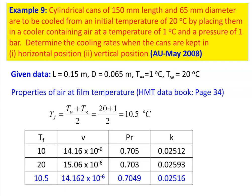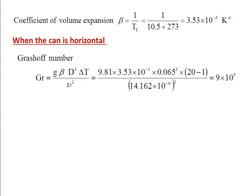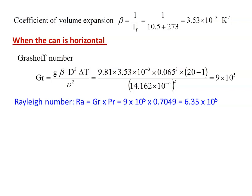Properties of air at film temperature (20+1)/2 = 10.5°C from page 34: kinematic viscosity = 14.16×10⁻⁶, Prandtl number = 0.7049, thermal conductivity = 0.02516, and β = 1/Tf = 3.53×10⁻³. For the horizontal cylinder, Grashoff number = G·β·d³·ΔT/ν² = 9.8×3.53×10⁻³×0.065³×19 / (14.16×10⁻⁶)² = 9×10⁵. Rayleigh number = Gr·Pr = 9×10⁵×0.7049 = 6.35×10⁵.